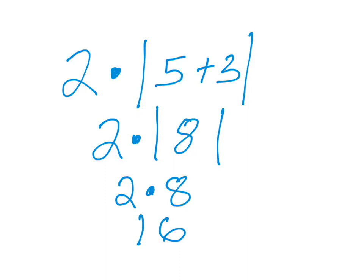Remember, the absolute value bars also act as a grouping symbol. First do the arithmetic inside, and then take away the sign when you remove the absolute value bars.